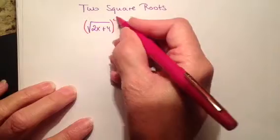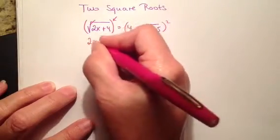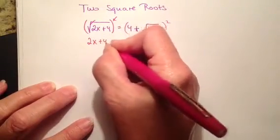A square and a square root cancel each other out. So on this side, we just end up with 2x plus 4.